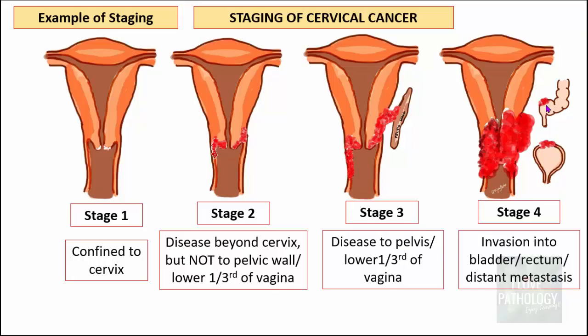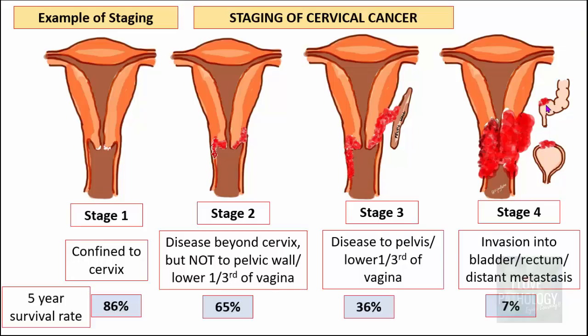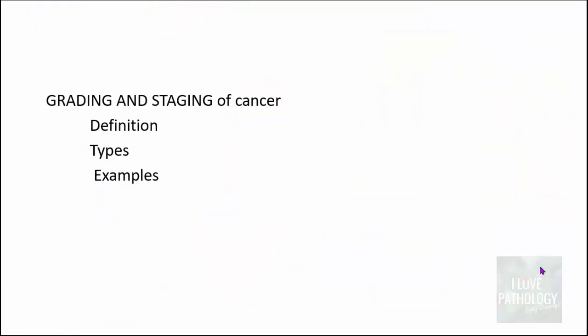Why do we need to know these stages? As the stage increases, the 5-year survival rate drastically decreases. Stage 1 cancers have a 5-year survival rate of around 86%, whereas Stage 4 cancers have a 5-year survival rate of only 7%. That is the importance of staging of cancers.